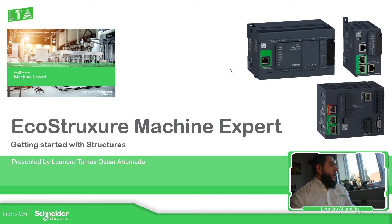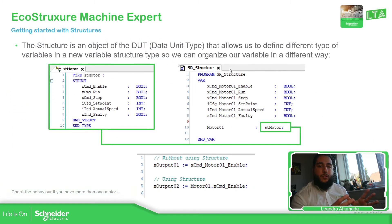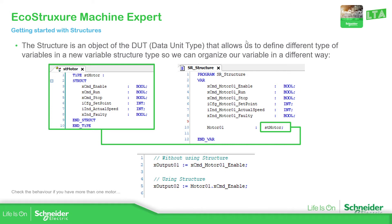Here we can see an example of how to use structures — how to define a structure and how to use it in our software. The structure, once added into the software, is a type of DUT — Data Unit Type. So the structure is one of the types available in the software for the element DUT, and it's a good practice to use structures so we can organize the variable features in our system.